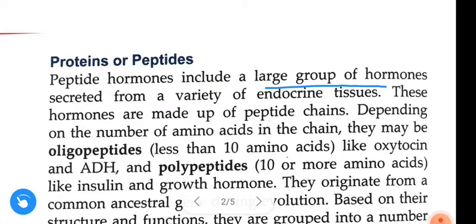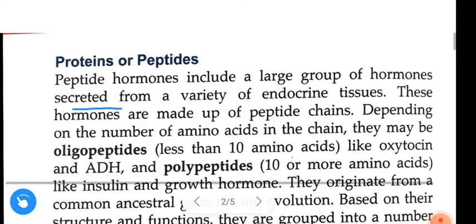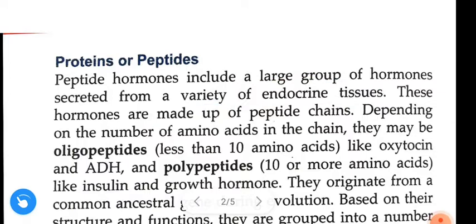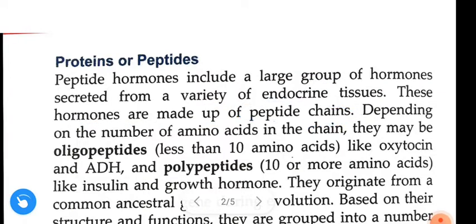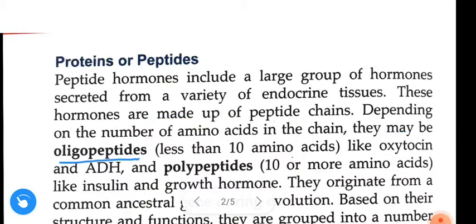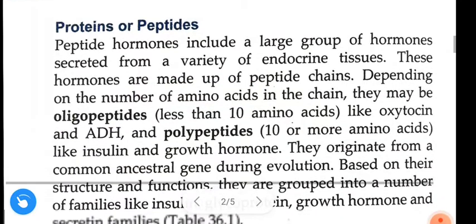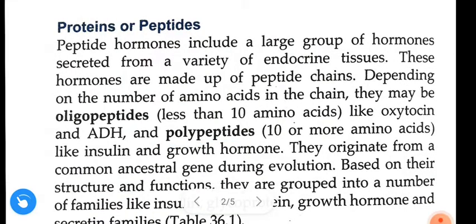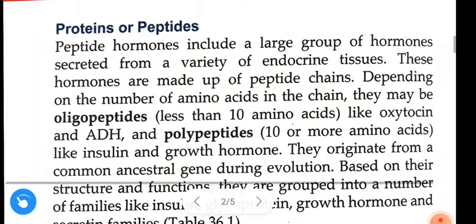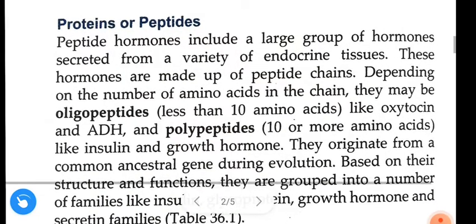First, proteins are peptide hormones. Peptide hormones include a large group of hormones secreted from a variety of endocrine tissues. These peptide hormones are made up of peptide chains. Depending on the number of amino acids in the chain, they may be oligopeptides or polypeptides.